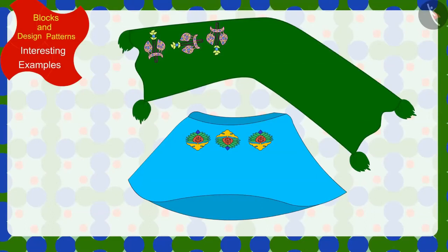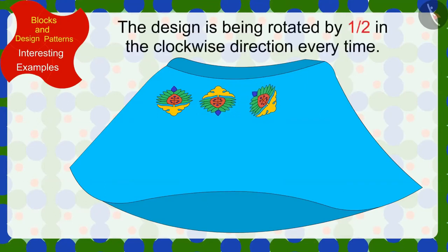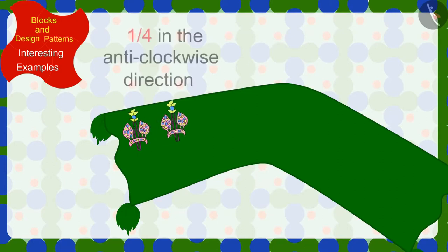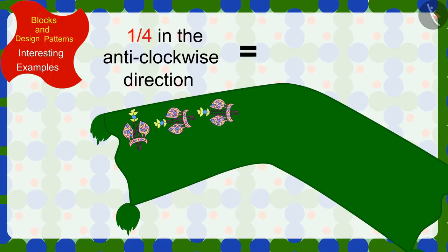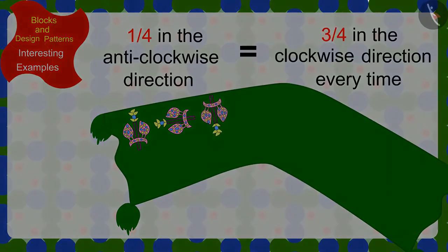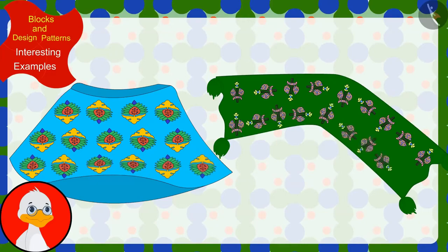Children, can you now help Uncle find the rules of patterns made on this skirt and the dupatta? Find the solution for this with your friends. In the pattern on the skirt, the design is being rotated by half in the clockwise direction every time. And in the pattern made on the dupatta, the design is being rotated by a quarter in the anti-clockwise direction, or three-fourths in the clockwise direction, every time. Uncle also found the rules of those incomplete patterns and completed them.